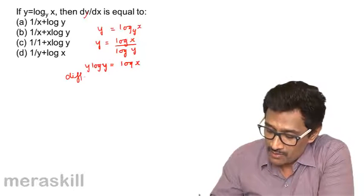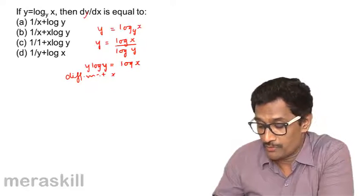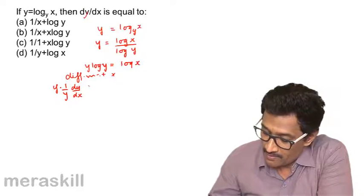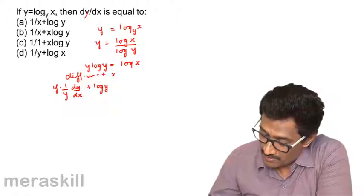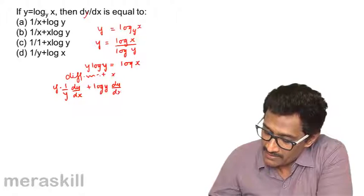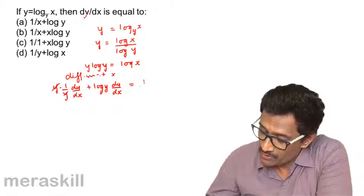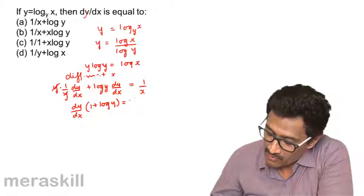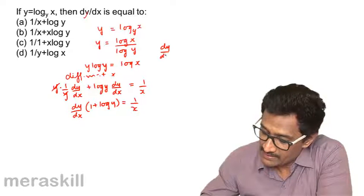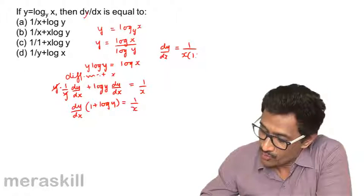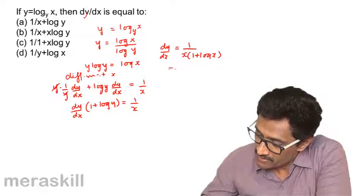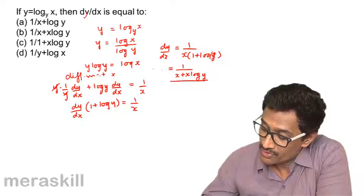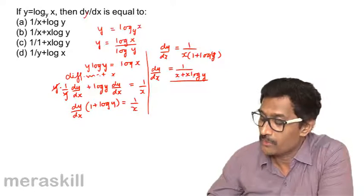Now differentiate with respect to x. Using the product rule on y·log y: (1/y)·(dy/dx) + log y·(dy/dx) = 1/x. So dy/dx·(1 + log y) = 1/x. Therefore dy/dx = 1 / (x(1 + log y)), which equals 1 / (x + x·log y). Option d is correct.